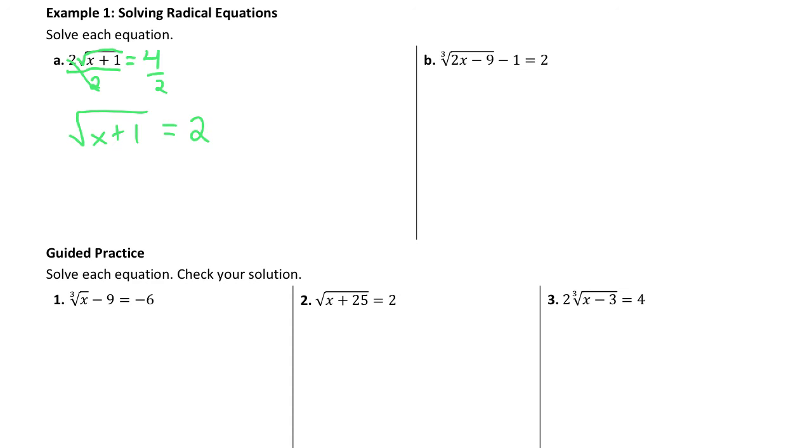So this becomes the square root of x plus one equals two. I have a radical isolated. And this is a square root. So the way I continue to solve is I raise both sides to the second power. So this becomes x plus one equals four.